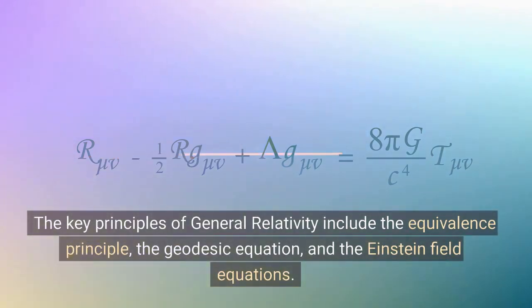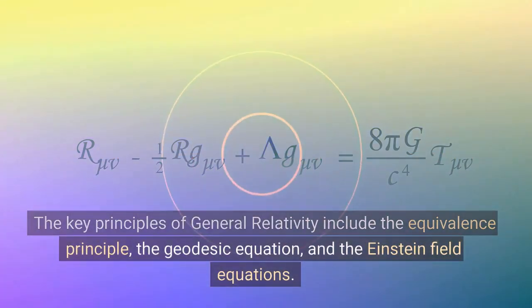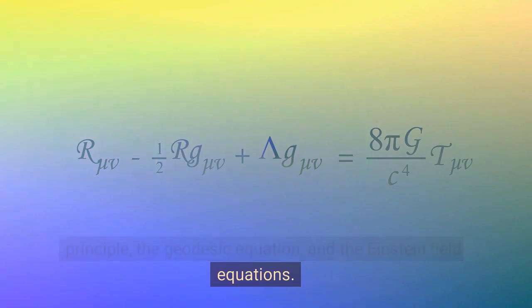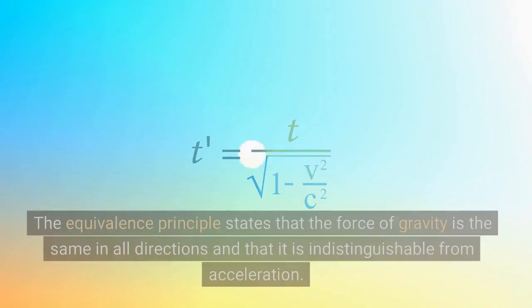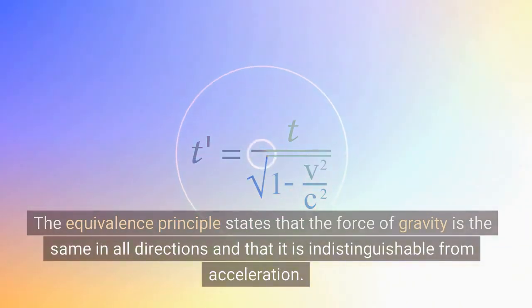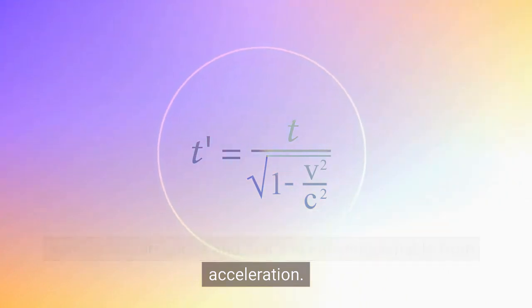The key principles of general relativity include the equivalence principle, the geodesic equation, and the Einstein field equations. The equivalence principle states that the force of gravity is the same in all directions and that it is indistinguishable from acceleration.